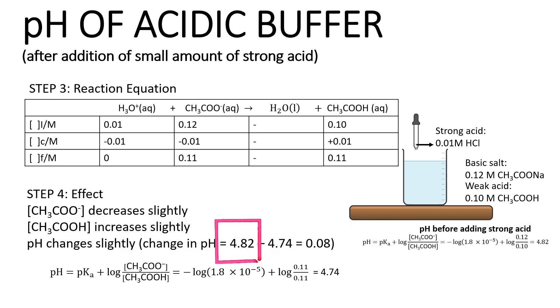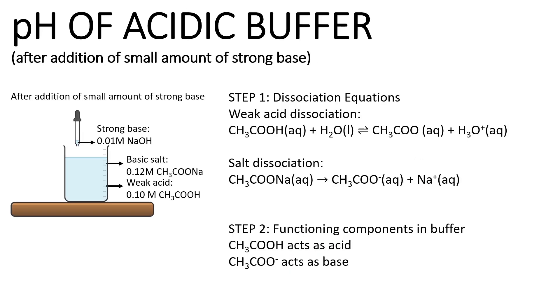Before the addition of strong acid, the pH was 4.82. After the buffer removes the small amount of strong acid added, the pH becomes 4.74. The change in pH is 4.82 minus 4.74, giving a change of 0.08.